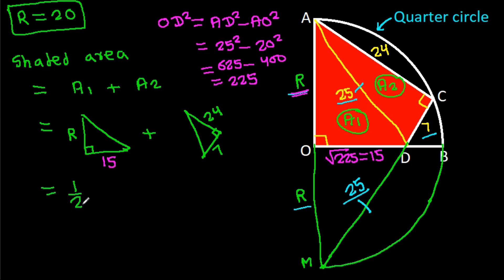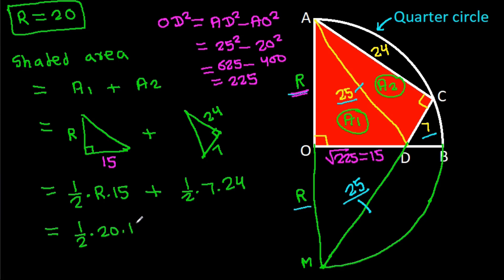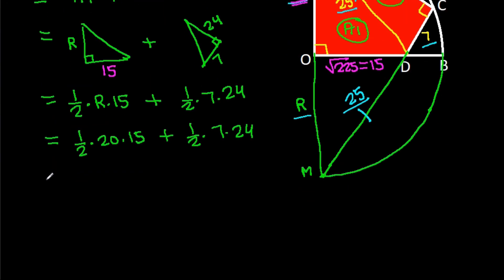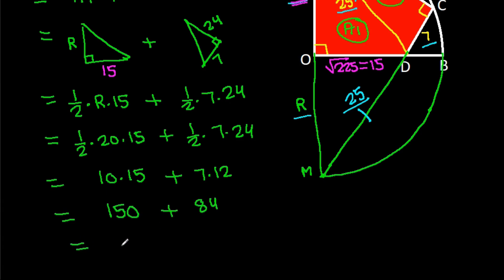So the shaded area = (1/2)(R)(OD) + (1/2)(7)(24) = (1/2)(20)(15) + (1/2)(7)(24) = 150 + 84 = 234.